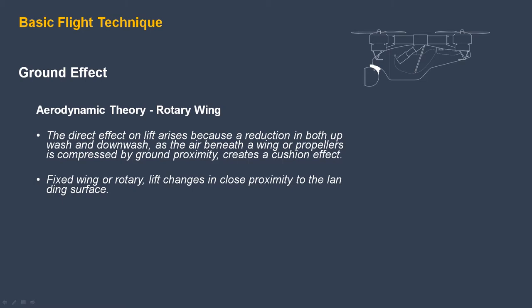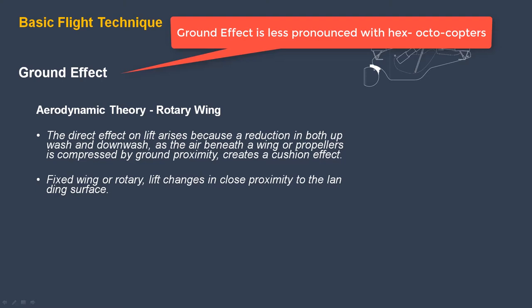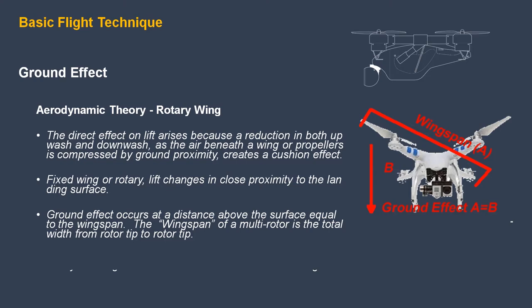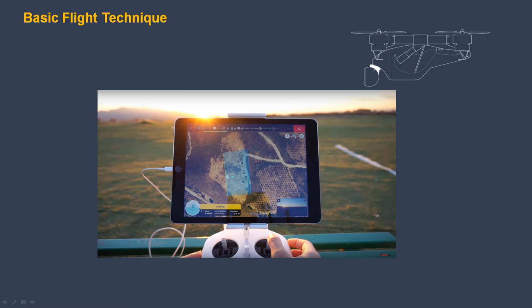Ground effect has a direct effect on lift because it creates a reduction in both upwash and downwash. As the air beneath a wing or propellers is compressed by the proximity to the surface of the ground, it creates a cushion effect. Fixed wing or rotary lift changes in close proximity to the landing surface. Ground effect occurs at a distance above the surface equal to the wingspan. The wingspan of a multirotor is the total width from rotor tip to rotor tip. On a typical quadcopter, that would be about 2 feet.